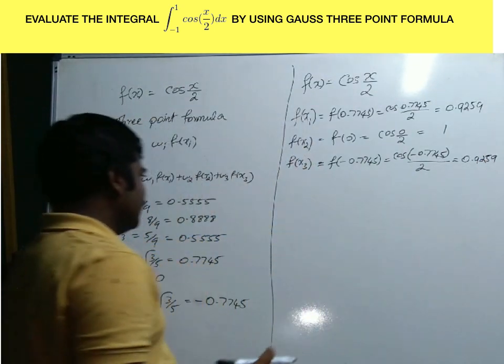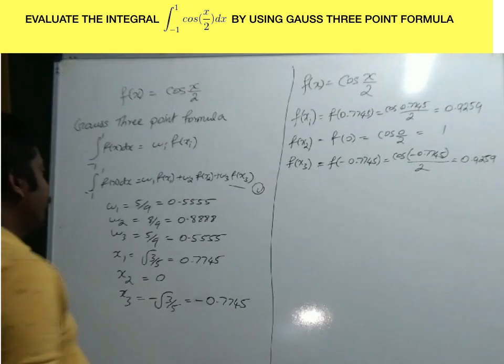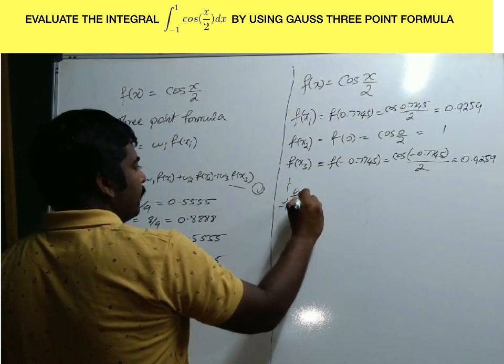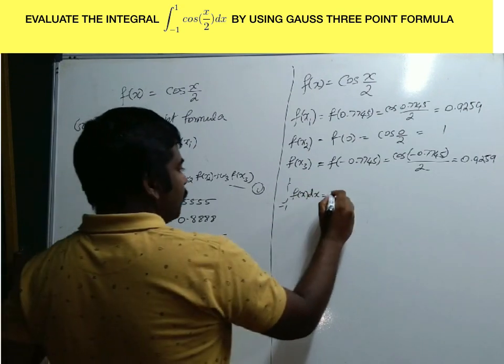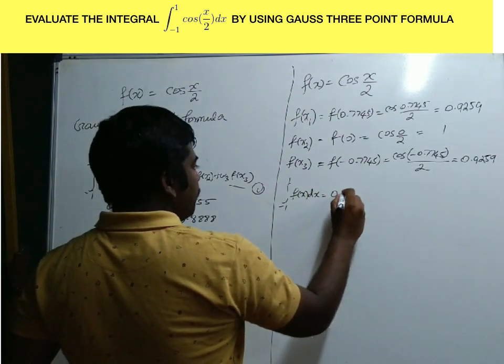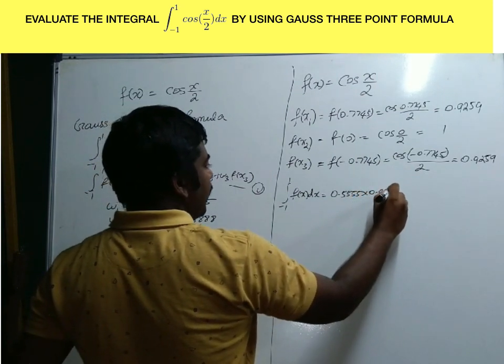Substitute all these values into the equation. Call this equation 1. In equation 1, you will get: integral from minus 1 to 1 of f(x) dx equals w1 times f(x1), which is 0.5555 times 0.9259.